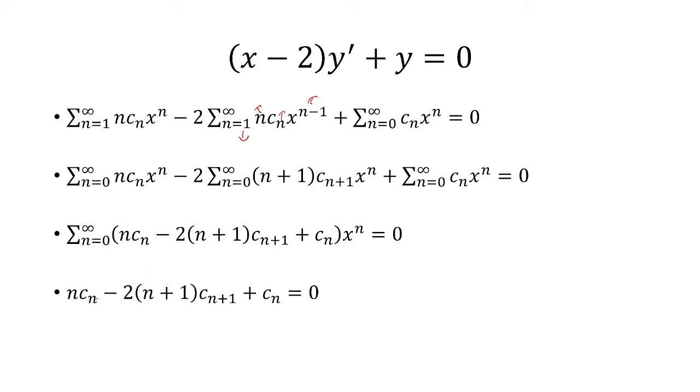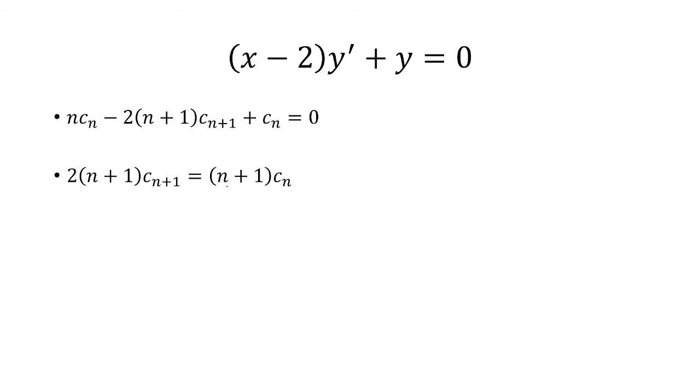So I'm going to set this equal to 0, and basically I got n times c sub n and c sub n to the right side, factor out the c sub n, and then multiply both sides by negative 1 to get to this. The n plus 1s are going to cancel, and so we have c sub n plus 1 equals c sub n over 2.